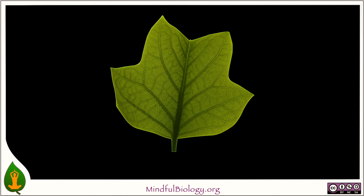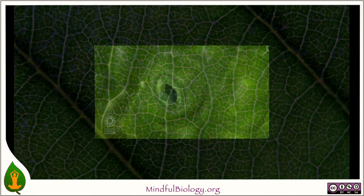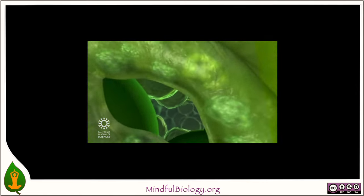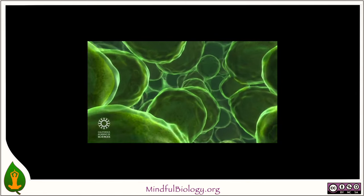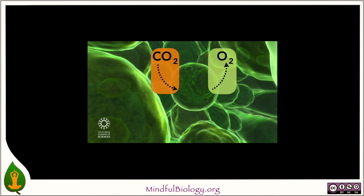Even plants participate in such exchange. If we take this leaf and magnify it greatly, we see that it has on its undersurface little openings that allow atmospheric air to enter deep within the substance of the leaf. As we zoom in to the leaf's interior, we see the plant cells exposed to the air that flows around them through that tiny opening. These individual cells can absorb carbon dioxide and release oxygen — the opposite of what our bodies do, since our bodies take in oxygen and release carbon dioxide as a waste product.